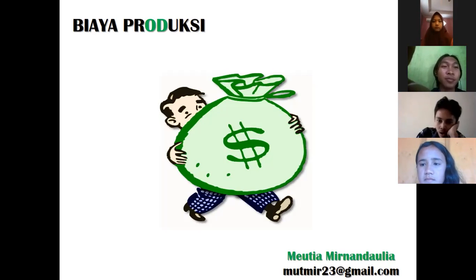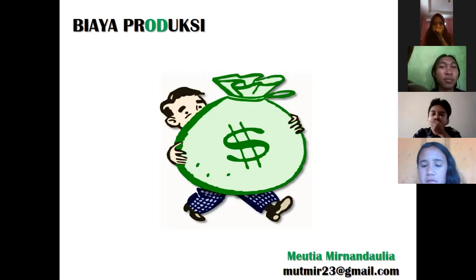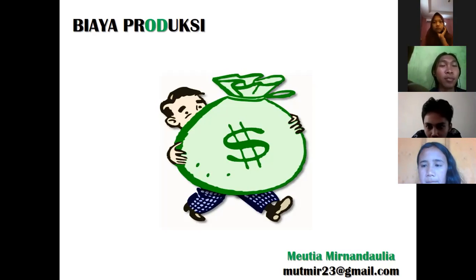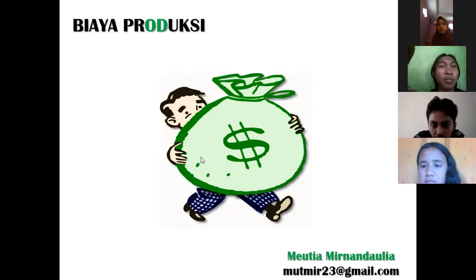Kita belajar tentang biaya produksi. Udah pernah dengar nggak belajar ini? Nanti kalau sempat lanjut lagi ke bunga sederhana, bunga majemuk. Kayaknya kita balapan nih, soalnya banyak ketinggalan kan. Ibu jarang zoom.